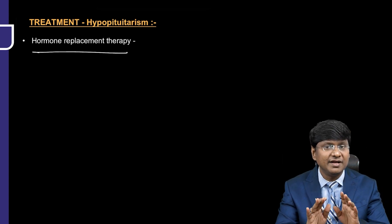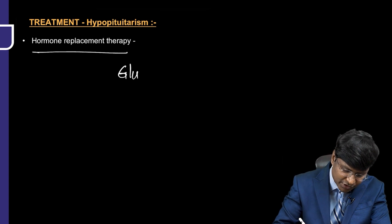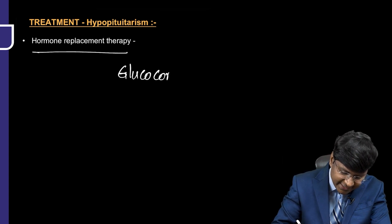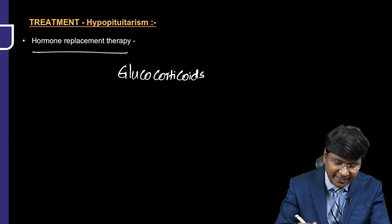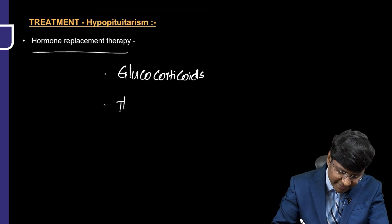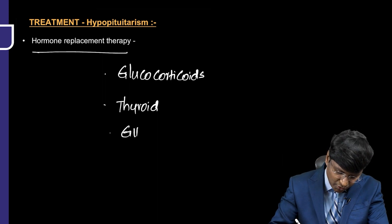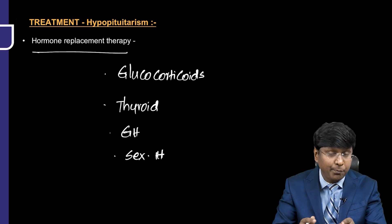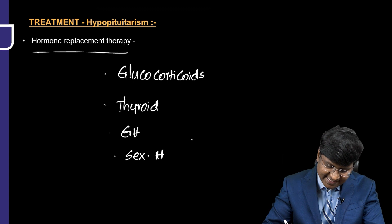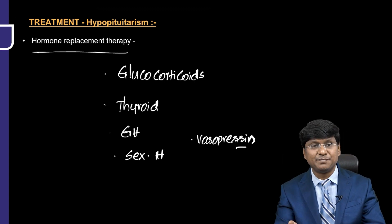Very important is the hormonal replacement therapy. In the hormonal replacement therapy, first and foremost, the very important hormone that has to be replaced on an emergency basis will be the glucocorticoids. Followed by that, thyroid hormone needs to be supplemented, then growth hormone, then sex hormones. Then, if there is posterior pituitary extension, there will be vasopressin deficiency, in which you need to give a vasopressin analog — that is desmopressin.